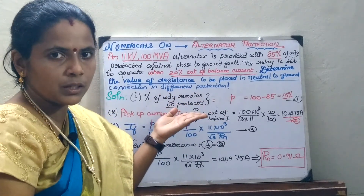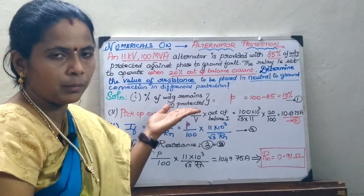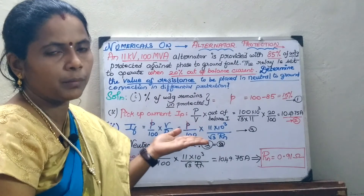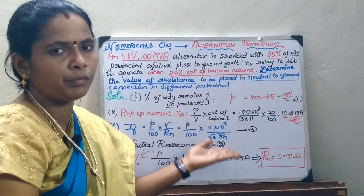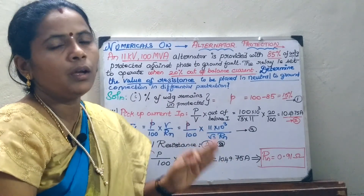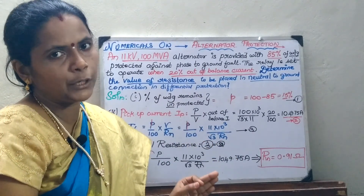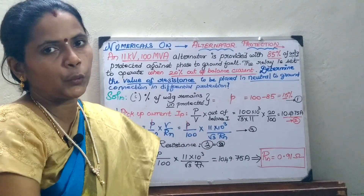So only four steps: find out the percentage of the winding that remains unprotected, find the fault current, find the pickup current, and equate them to find out your neutral resistance value. Thank you.